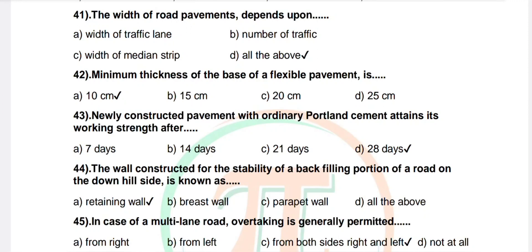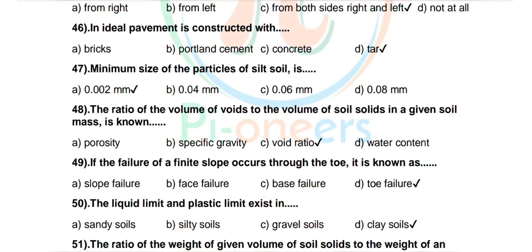Question 46: An ideal pavement is constructed with — options: bricks, land cement concrete, tar. Correct answer: tar. Question 47: Minimum size of the particles of silt soil is — options: 0.002 mm, 0.4 mm, 0.06 mm, 0.08 mm. Correct answer: 0.002 mm.